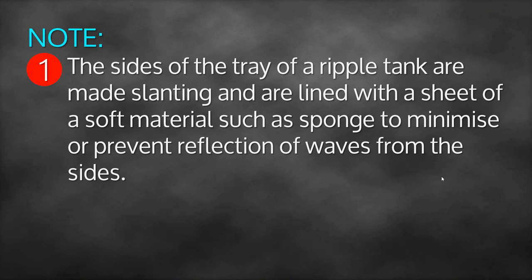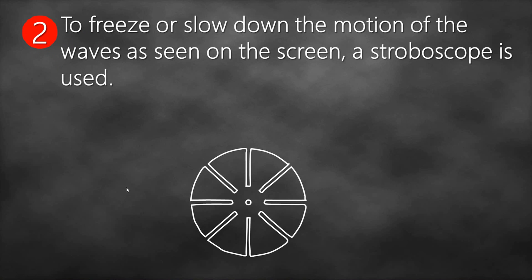Note number one: the sides of the tray of a ripple tank are made slanting and lined with a sheet of soft material such as a sponge, to minimize or prevent reflection of waves from the sides. Note number two: to freeze or slow down the motion of the waves as seen on the screen, a stroboscope is used.